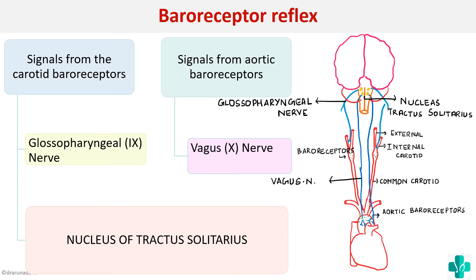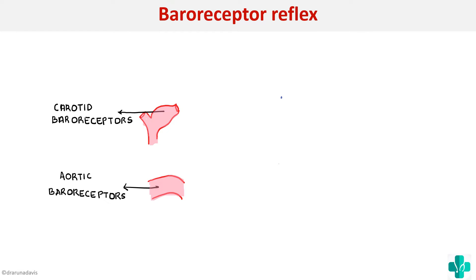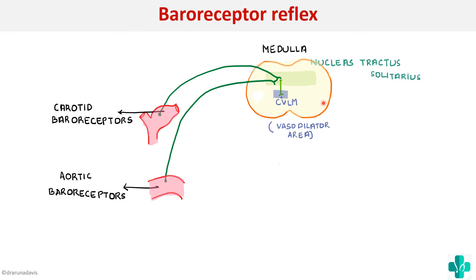Now for the reflex proper: whenever there is an increase in blood pressure, it will be detected by the carotid and aortic baroreceptors. There will be more stretch of the vessel wall and thus increased discharge of these baroreceptors. This information is transmitted via the glossopharyngeal and vagus nerves to the nucleus of tractus solitarius. The NTS then stimulates the CVLM — the caudal ventrolateral medulla, also called the vasodilator area.